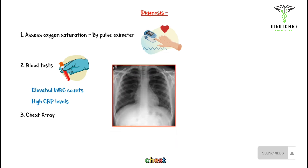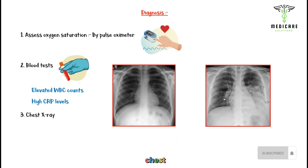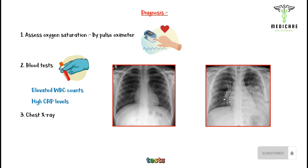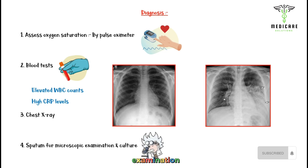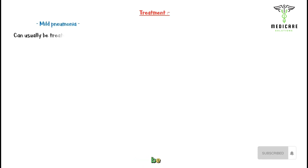Here we have a normal chest x-ray alongside a chest x-ray of a pneumonia patient. Small white arrows indicate the consolidation in the lungs due to inflammatory infiltrate. In addition to these tests, sputum is taken for microscopic examination and culture to identify the causative organism.